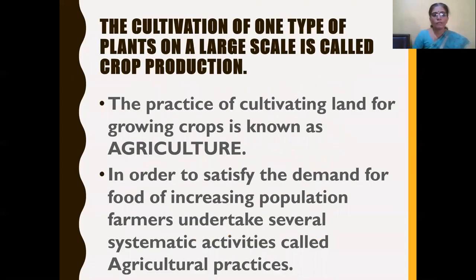In the last session, we learnt what is crop — that is, what is crop production. The cultivation of one type of plants on a large scale is called crop production. And this practice of cultivating land for growing crops is known as agriculture.